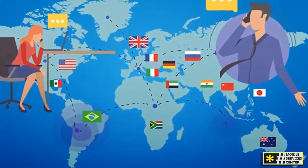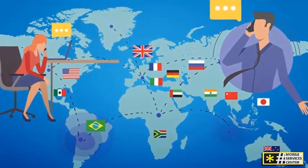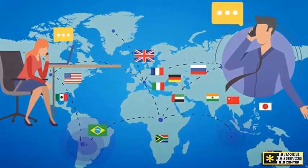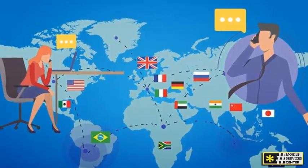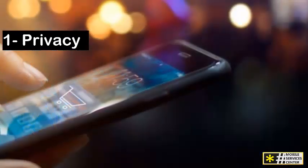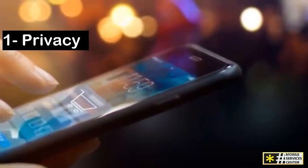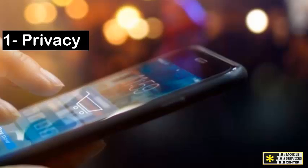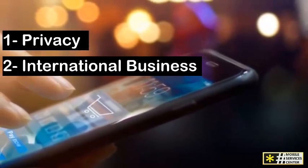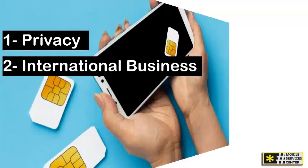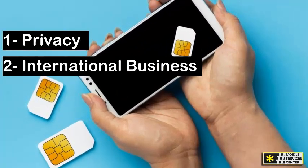Why create a plus 44 country code number for WhatsApp? Here are some key reasons. Privacy: many people use temporary numbers to protect their privacy when signing up for apps like WhatsApp. International Business: if you're dealing with clients or contacts in the UK, having a plus 44 number gives you a local presence and can make communication smoother.